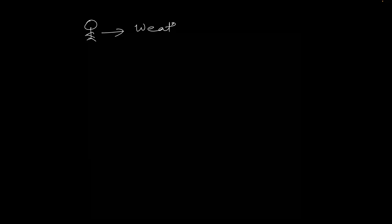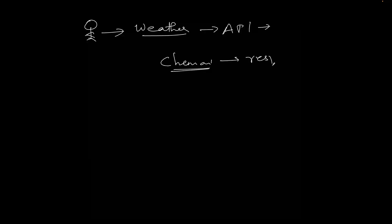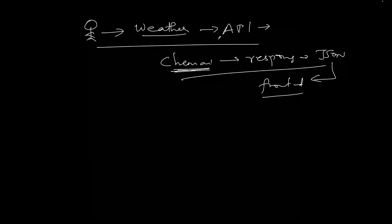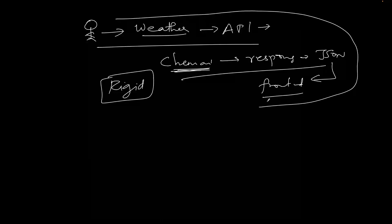Let's say, as a human developer, how do we get weather data? We request the weather data and pass it to the front end. This entire process is rigid — why rigid? Because I will code every single step manually. This is one agent connected to a weather API.